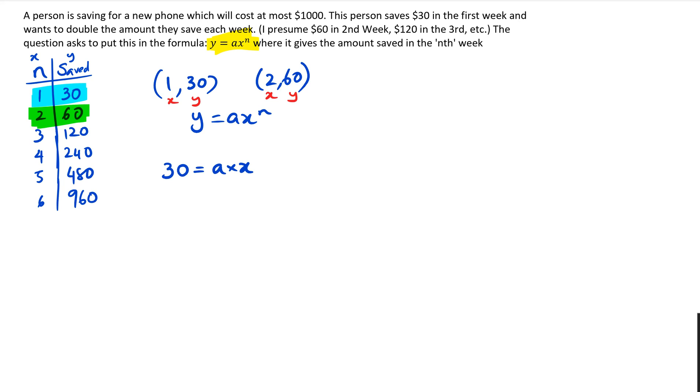So the first equation is going to be 30 equals a times x to the power of 1. The second equation is 60 equals a times x squared. So what I can do for both of these equations is I'm gonna eliminate a. So I'm gonna rearrange this so that a would become 30 divided by x.